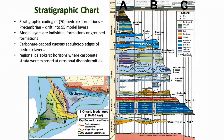Model layers represent individual formations or grouped formations where necessitated by data quality, quantity, or thin formations. The erosional profile of the subcrop edges is represented on the chart, showing the frequent occurrence of carbonate-capped cuestas. Of particular importance for groundwater movement is the occurrence of regional paleokarst horizons where carbonate strata were severely exposed at erosional disconformities in the geologic past.